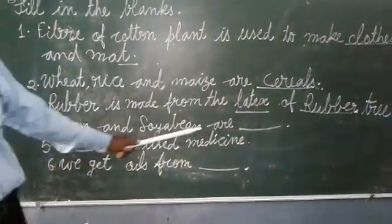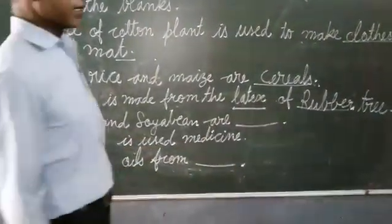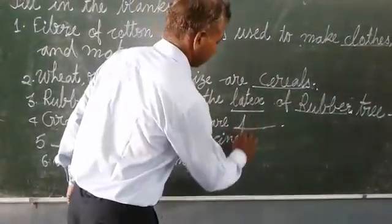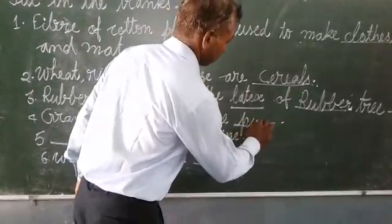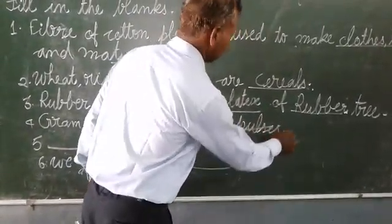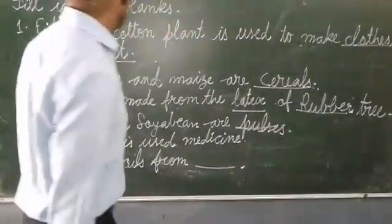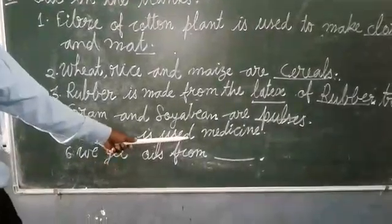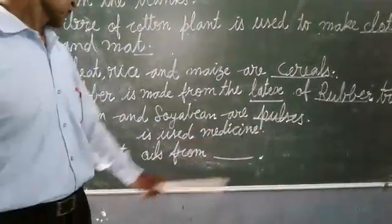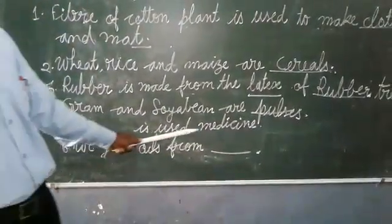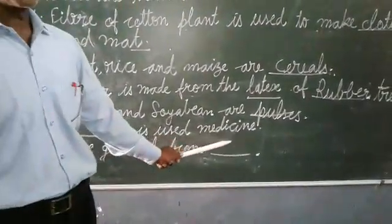Next: grain and soybean are pulses. Grain and soybean are also considered pulses.